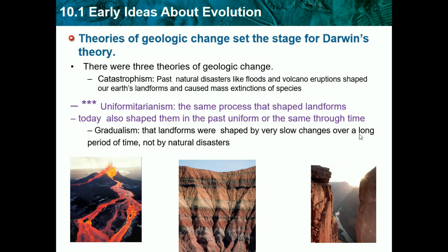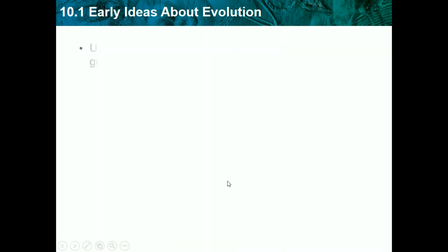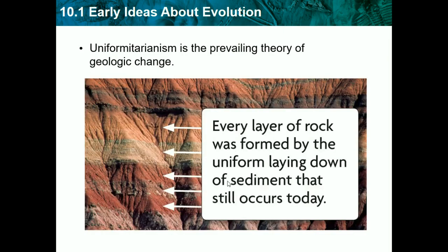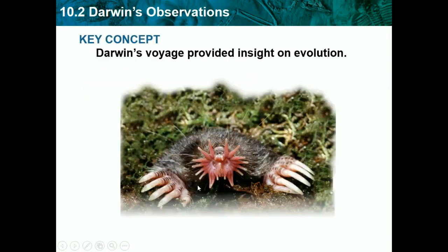As sediment deposits on the Earth over time, we get this beautiful image of rock layers. Uniformitarianism is the prevailing theory of geologic change today. Every layer of rock was formed by the uniform laying down of sediment that still occurs today.